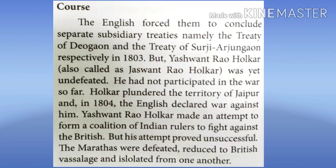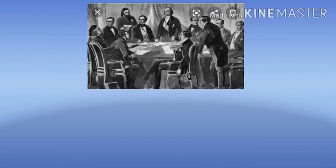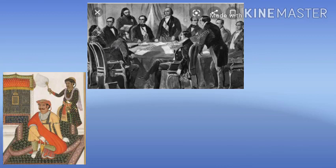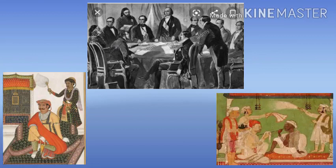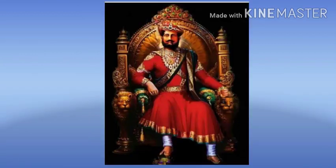Holkar had not participated in the war so far. Holkar plundered the territory of Jaipur and in 1804 the English declared war against him. Yashwant Rao Holkar made an attempt to form a coalition of Indian rulers to fight against the British, but his attempt proved unsuccessful. The Marathas were defeated, reduced to British vassalage, and isolated from one another.